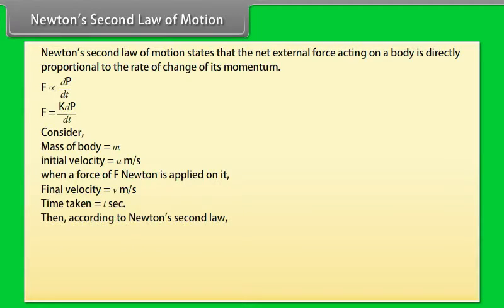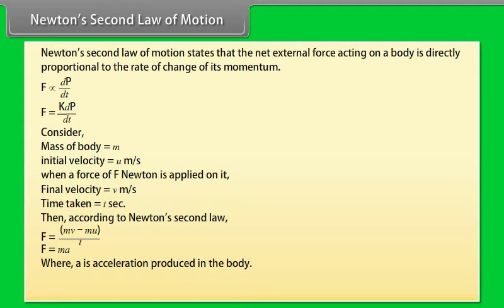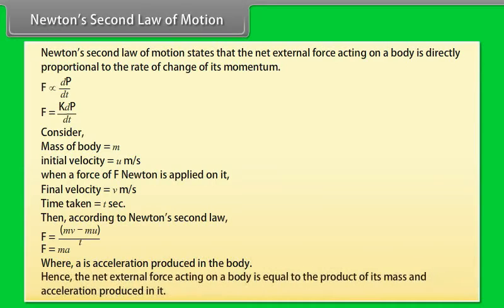Then, according to Newton's Second Law: F = (mv − mu) / t, which gives F = ma, where a is the acceleration produced in the body. Hence, the net external force acting on a body is equal to the product of its mass and the acceleration produced in it.